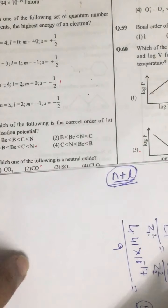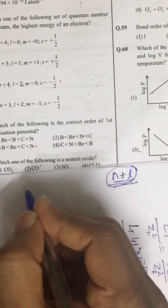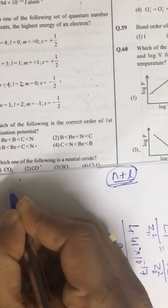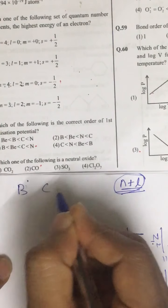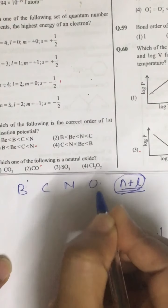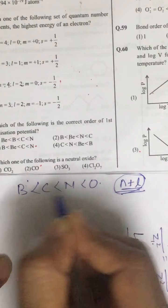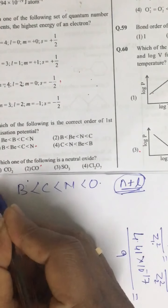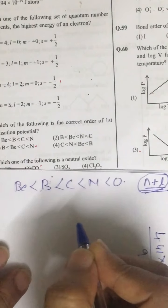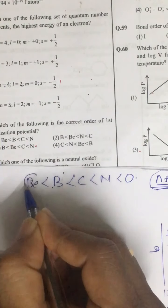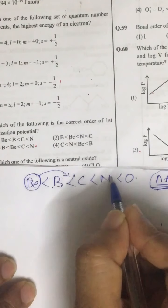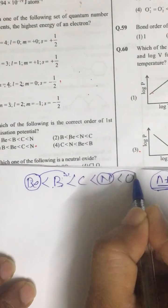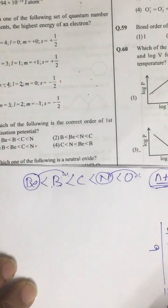Now look at question number 52. Increasing order of ionization energy. So on the basis of the position we have boron, carbon, nitrogen, oxygen. And left to right it should increase. And we have beryllium as well. So left to right it should increase. But beryllium due to completely full configuration shows higher value than boron. And nitrogen due to P3 configuration shows higher value than oxygen. So according to which the correct answer is third.